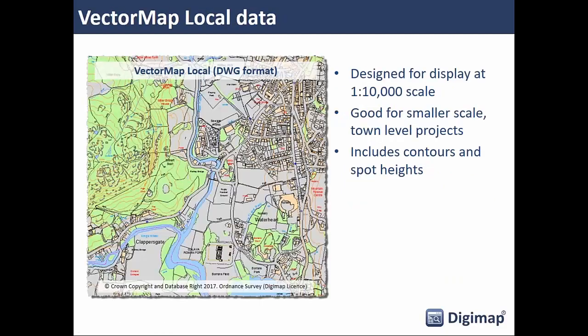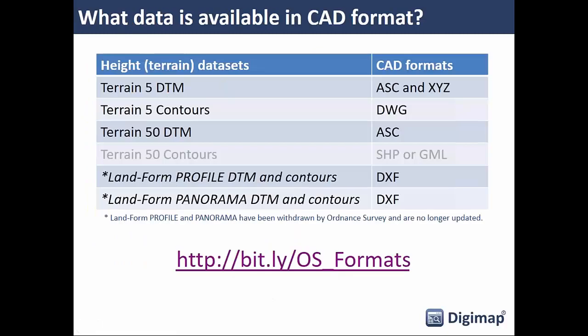VectorMap Local is another product available in CAD format. It's less detailed than MasterMap but good for smaller-scale projects at roughly town level. The nice thing about VectorMap Local is it includes contour data and spot heights, which you can see as the orange contour lines running through the woodland area on screen.